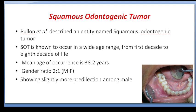It is known to occur in a wide age range from the 1st to the 8th decade of life. The mean age of occurrence is 38.2 years. It is found more in males than in females, with a male-to-female ratio of 2 to 1.